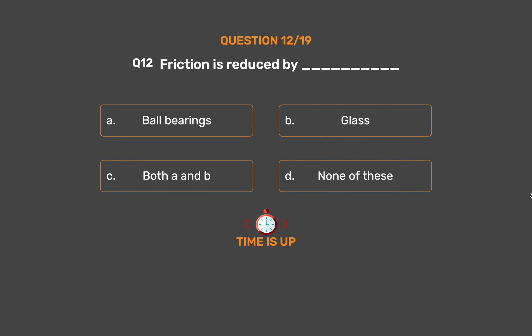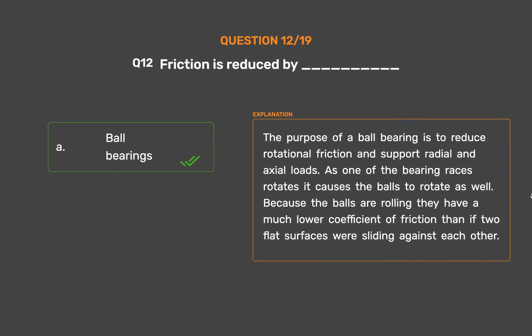The correct answer is Option A: Ball bearings. The purpose of a ball bearing is to reduce rotational friction and support radial and axial loads. As one of the bearing races rotates, it causes the balls to rotate as well. Because the balls are rolling, they have a much lower coefficient of friction than if two flat surfaces were sliding against each other.